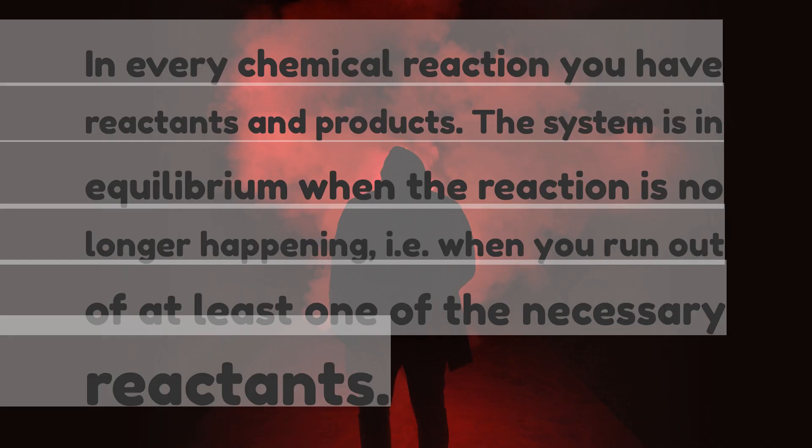In every chemical reaction you have reactants and products. The system is in equilibrium when the reaction is no longer happening, i.e. when you run out of at least one of the necessary reactants.